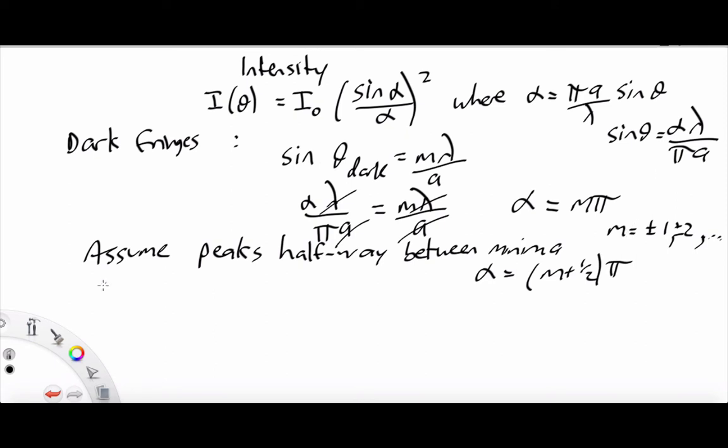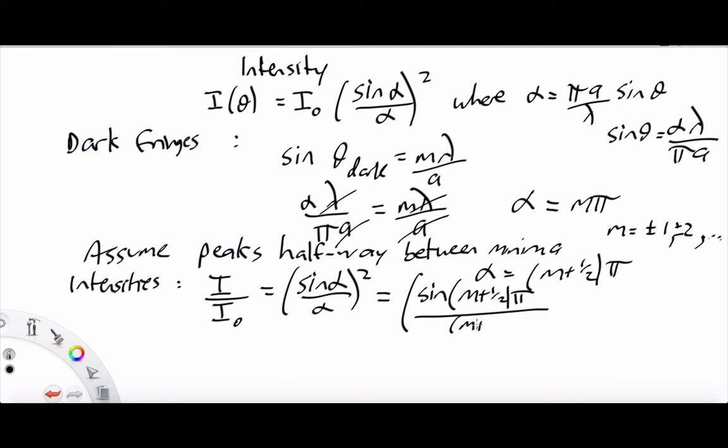So let's look at the intensity. We want the intensity over the central one. Now, we have I theta. If we divide by I naught, that gives us sin alpha over alpha squared, which equals sin of M plus a half pi over M plus a half pi squared. M is 1, 2, 3, etc.